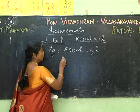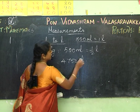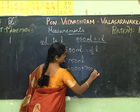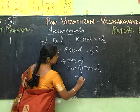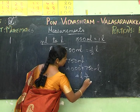If I have 4750 mL, I can split it as 4000 mL plus 750 mL. This gives 4 liters and ¾ liter, which equals 4¾ liters.